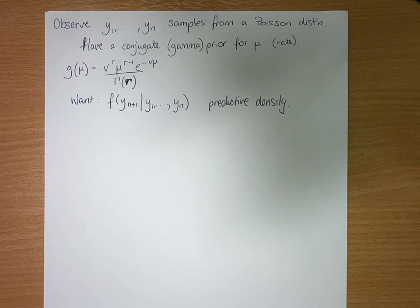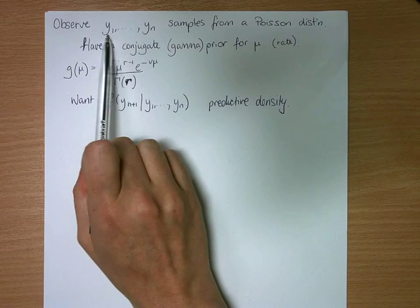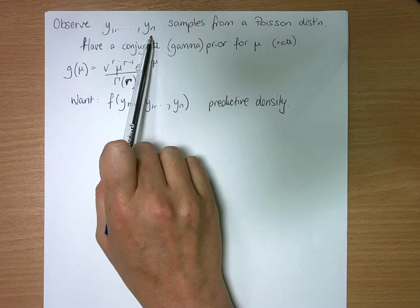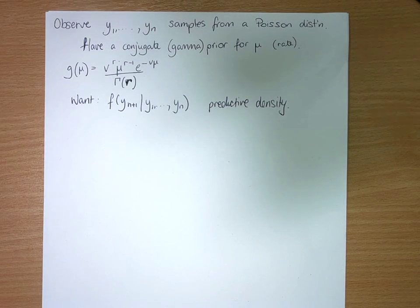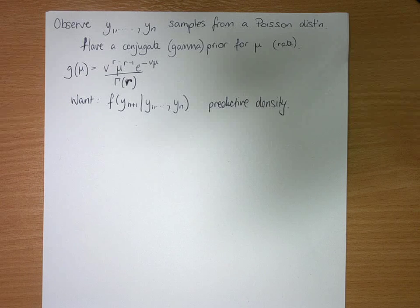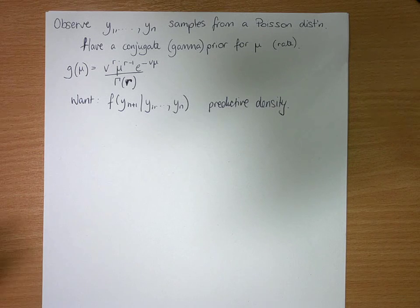In this example, we're looking at having already observed n samples from a Poisson distribution. We've been using a conjugate prior, which is a gamma prior for the rate mu.